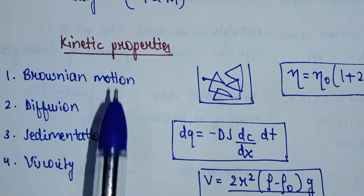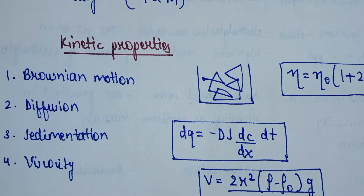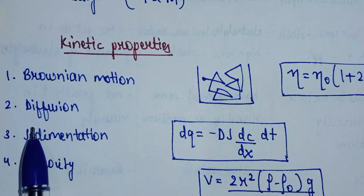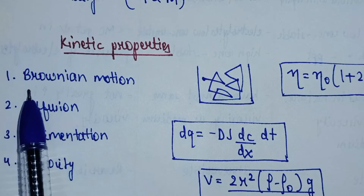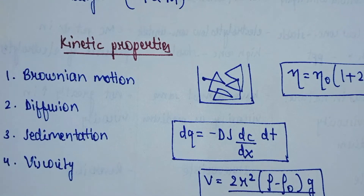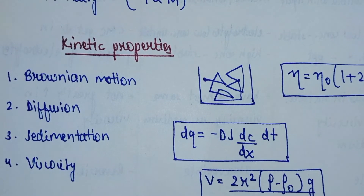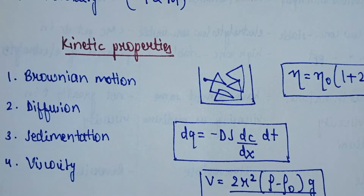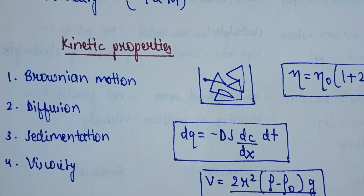Next, we look at the kinetic properties of colloids. Kinetic properties describe the motion or movement of colloidal particles in colloidal solution. There are four kinetic properties: first, Brownian motion; second, diffusion; third, sedimentation; fourth, viscosity. Brownian motion is simply the zigzag motion of particles. In colloidal dispersion, particles continuously collide with the walls, causing zigzag or Brownian motion. If Brownian motion is more, the stability of the colloidal solution is more.